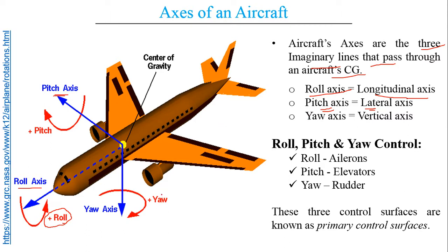The next motion is the yaw motion. If the aircraft is in yaw motion, it follows a particular axis known as the yaw axis, also known as the vertical axis. The pitch axis passes through the wings along the span; the roll axis is along the length of the fuselage; and the vertical axis is along the height of the fuselage.